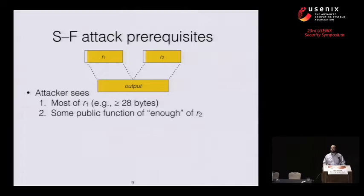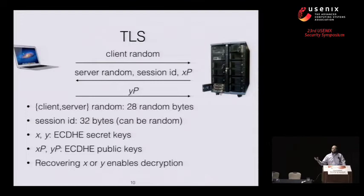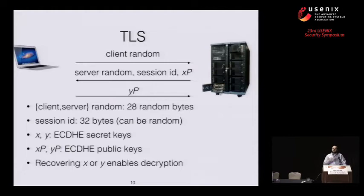In TLS, when a client connects to a server, the first thing during the handshake is it sends a message containing a 28-byte random value called client random. The server responds with its own 28-byte server random, a 32-byte session ID, and the Diffie-Hellman public key XP — where X is the private key and XP is the public key. The client then responds with its own public key. The key point is that if an attacker can recover either X or Y, they can decrypt the entire session, so these values must remain secret.